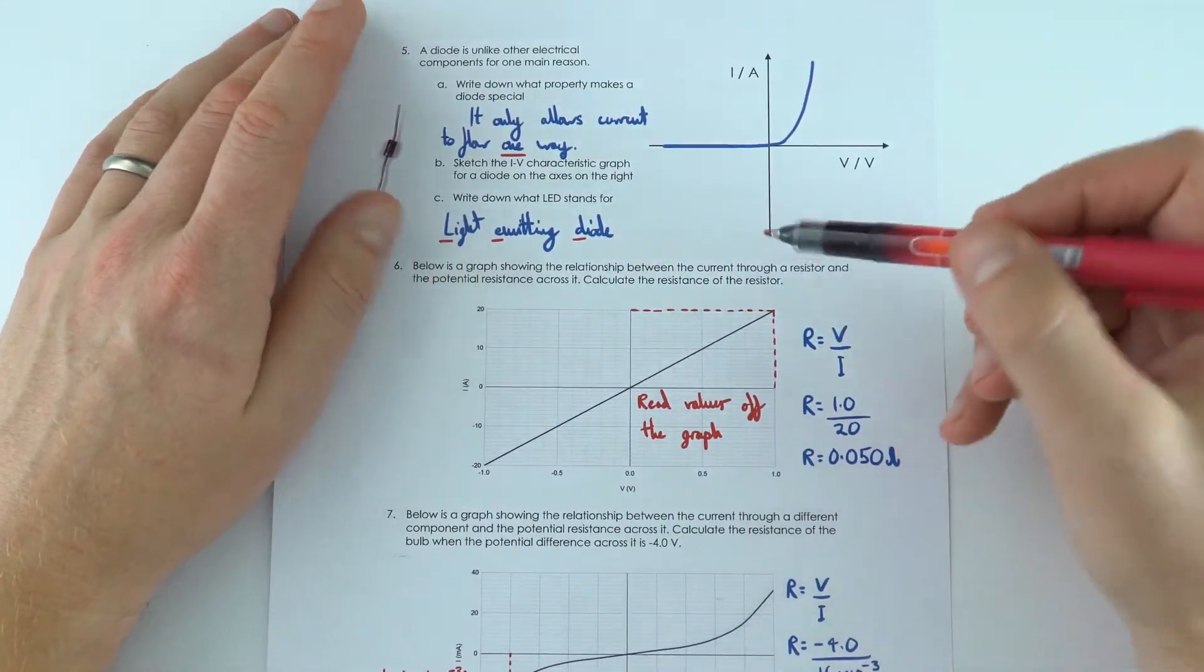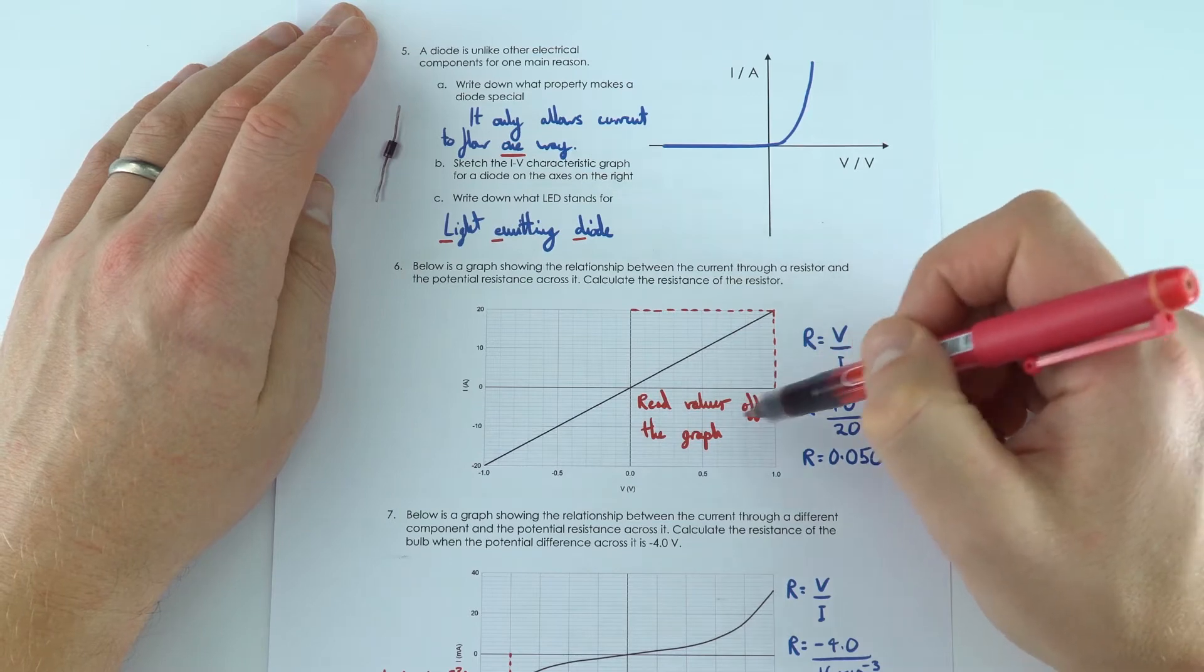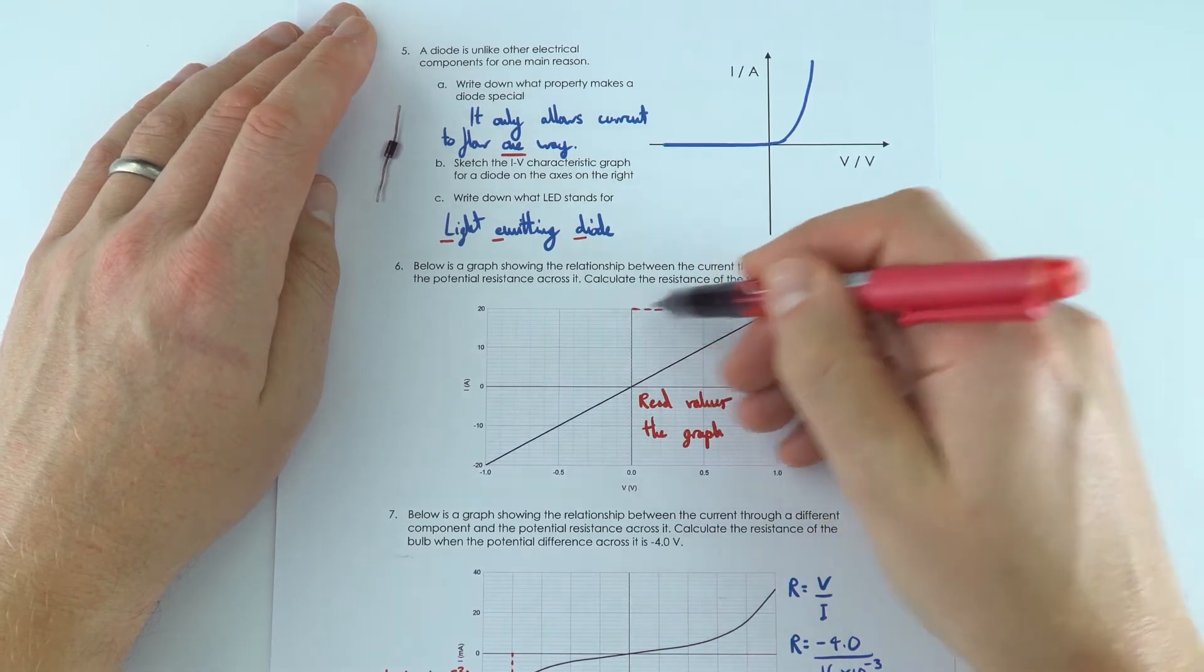And then for question six, all I'm doing is I'm going to use the numbers on the graph to read it off. And I just put some dotted lines to show the data I took.